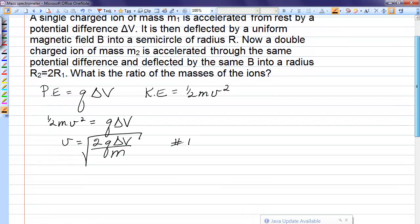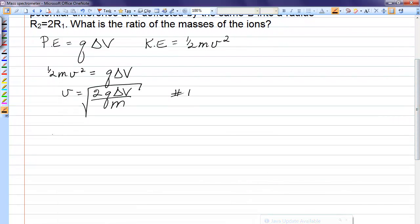Now the second thing that's going on is that the particle enters a magnetic field, therefore it feels the magnetic force, QVB, assuming everything's perpendicular. That force causes uniform circular motion, where we have mV squared over R.